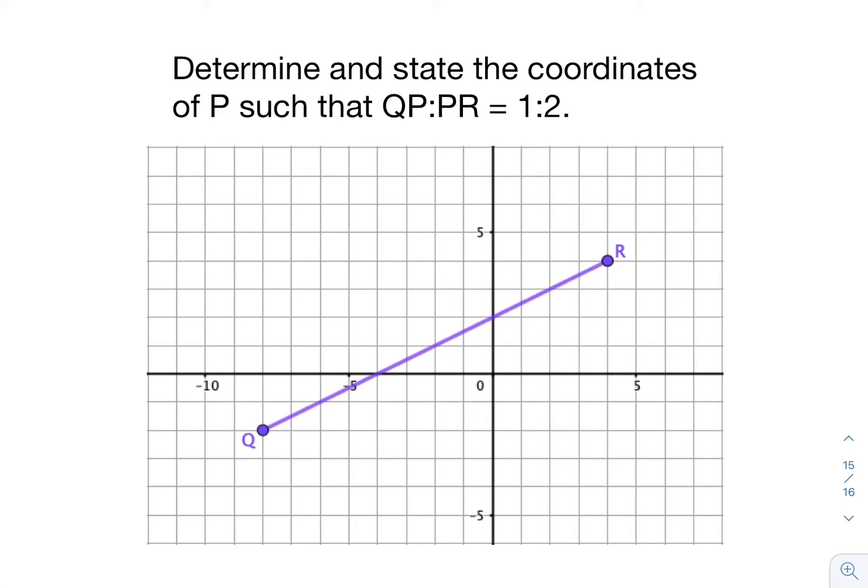We see on the graph that we have segment QR. One of its endpoints Q is plotted at the point (-8, -2), and the other endpoint R is at (4, 4).